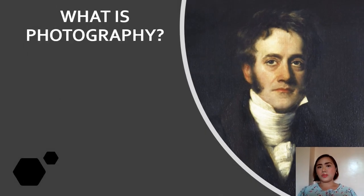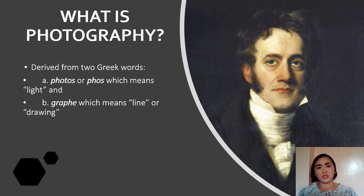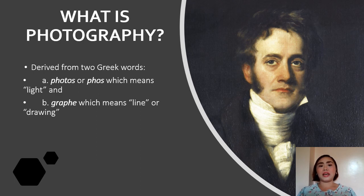Let us start by defining the term photography. What is the etymology of the word photography? Photography is derived from two Greek words: photos or phos, which means light, and graphic, which means line or drawing. So based on the etymology, the simplest definition for photography is drawing with light.